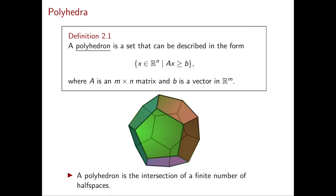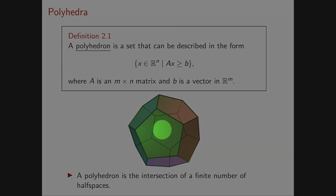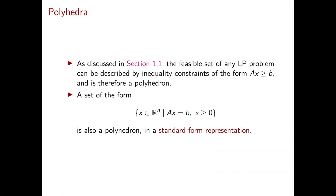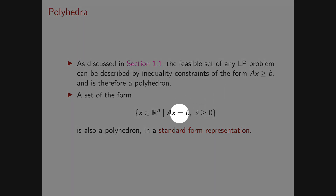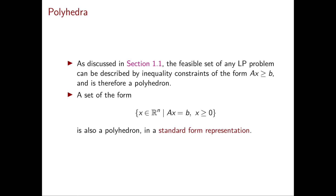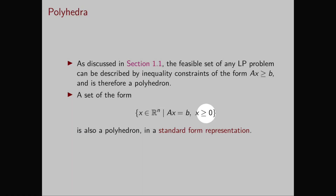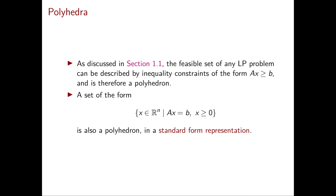Here is an example of a polyhedron in dimension 3 — you can try to determine the minimum number of inequalities needed to define it. In chapter 1 we showed that any linear programming problem can be described by inequalities of the form Ax ≥ b, which implies the feasible set of any LP is a polyhedron. We also saw standard form LPs with feasible regions of the form Ax = b, x ≥ 0; correspondingly, a polyhedron defined by Ax = b, x ≥ 0 is called a polyhedron in standard form representation.